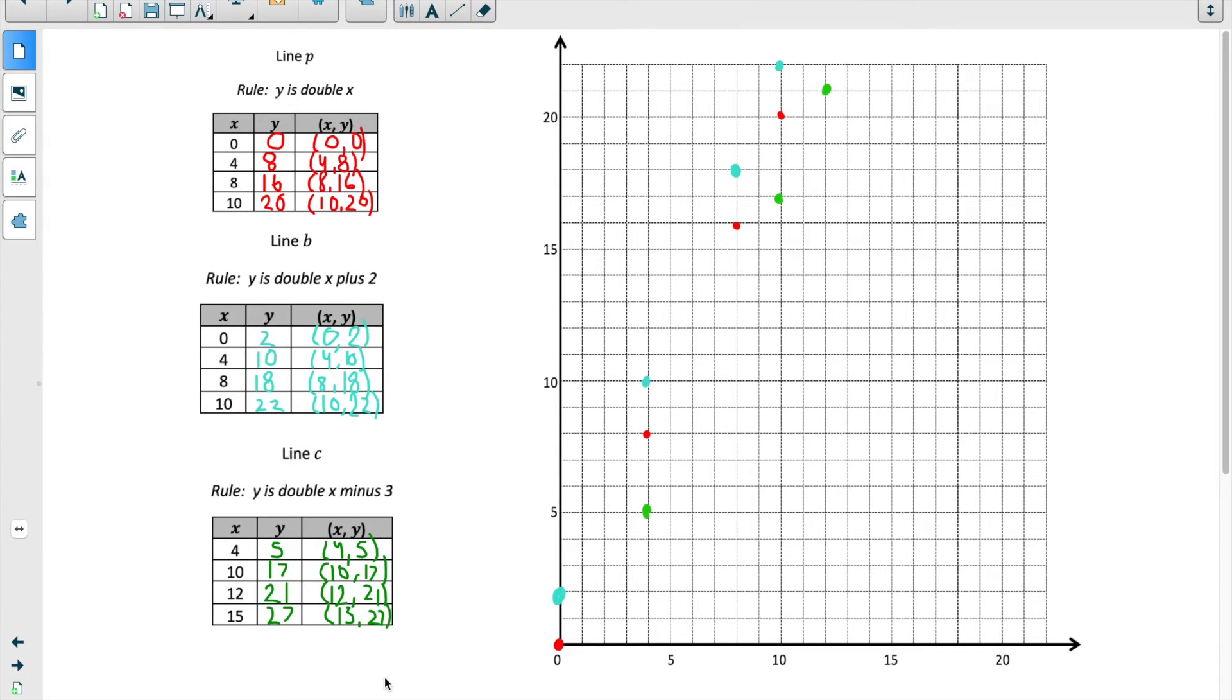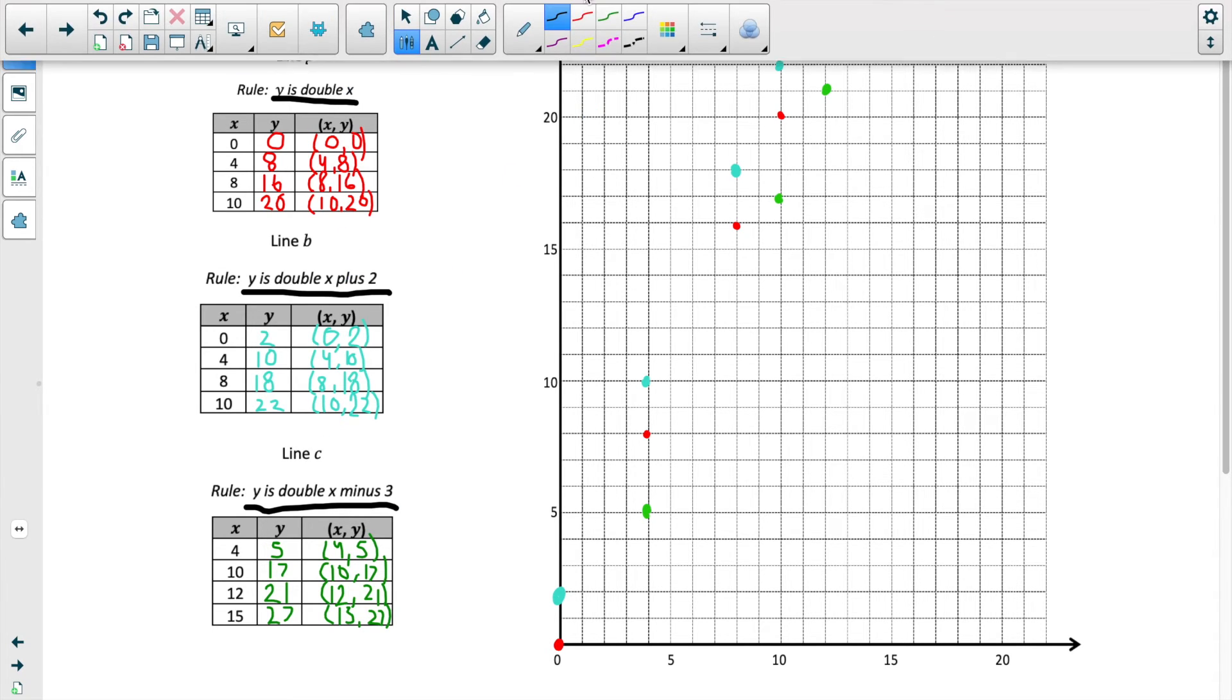But let's think about how addition and subtraction rules affect lines on a coordinate grid. Now we're going to look at some lines where, because of their rules, they actually end up parallel. And we're going to think about y. Huh? Get it? Y. Like the y coordinate. So if we look at each of these rules, here is y is double x. Here is y is double x plus 2. And here is y is double x minus 3. So while they're all being multiplied, they actually end up parallel.